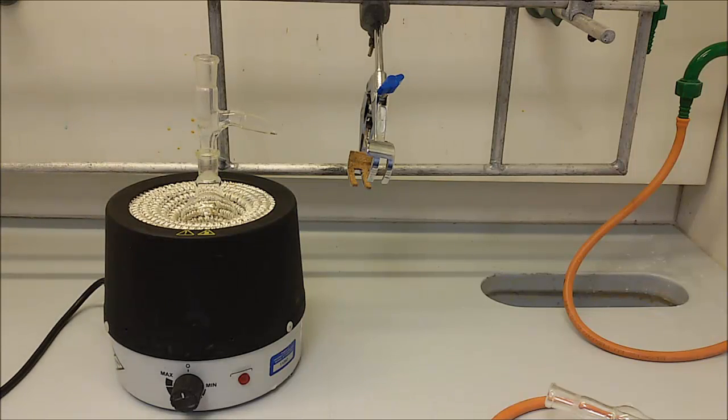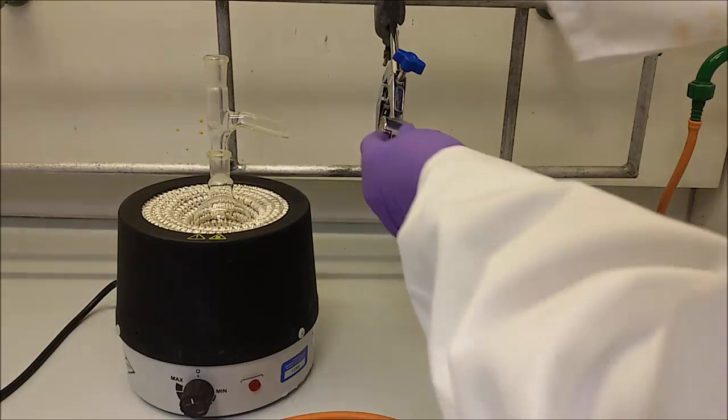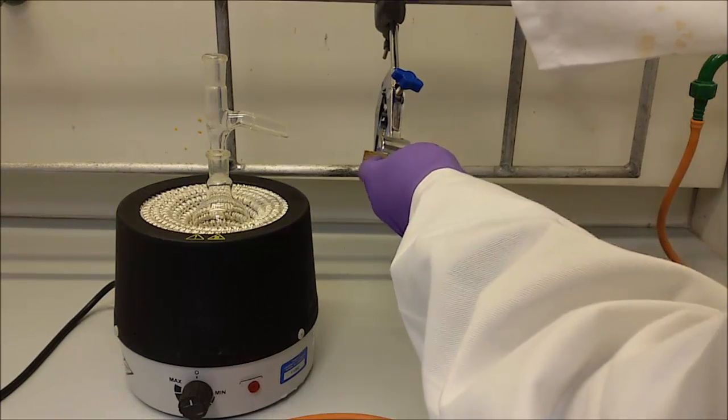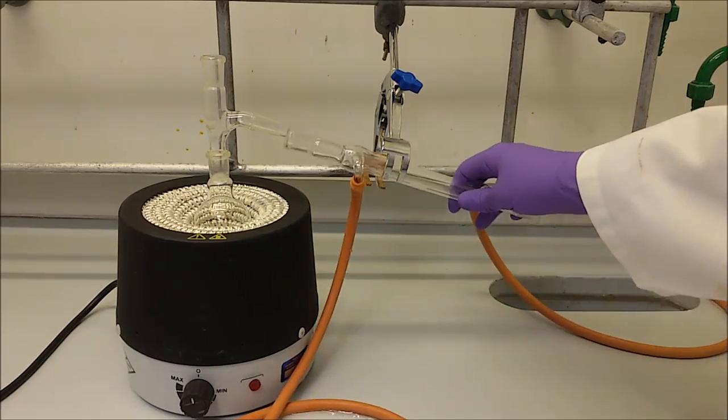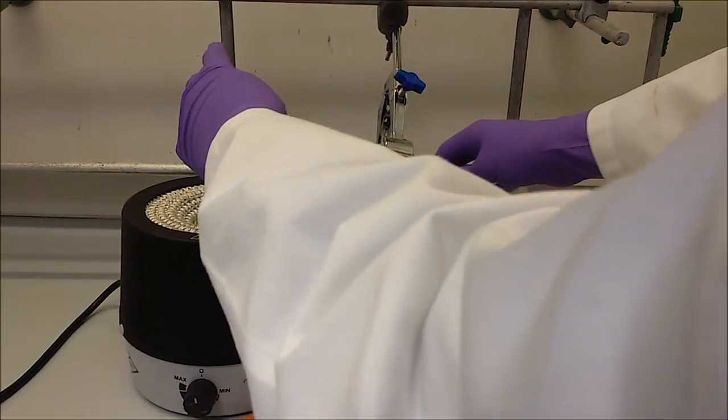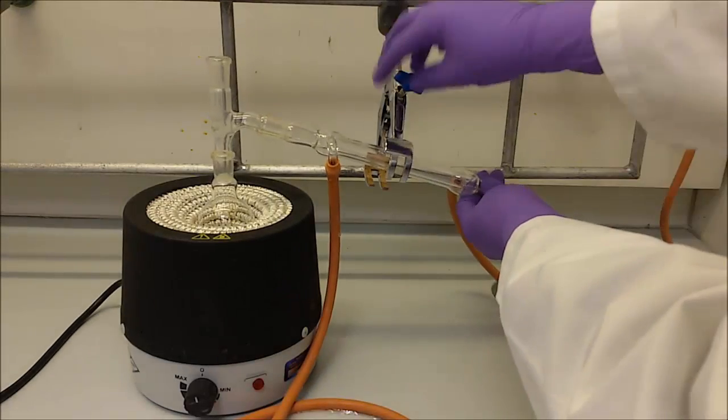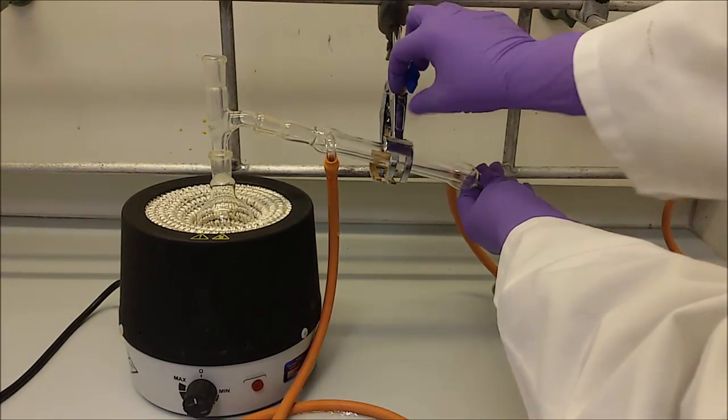The clamp next to the mantle will be used to clamp the condenser. Estimate the position of the condenser that will make the round bottom flask in approximately vertical position and fit the condenser. Again, make sure not to break the glass.